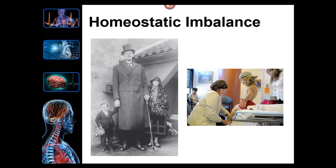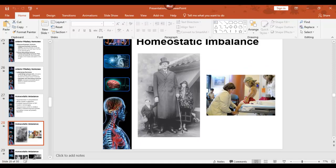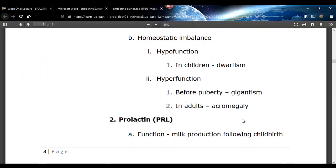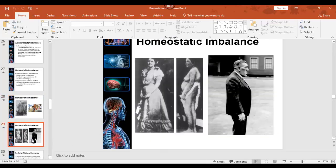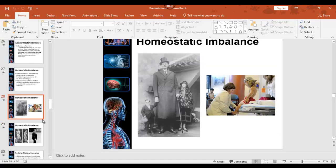Too much growth hormone prior to puberty would be gigantism, but excessive growth after puberty is called acromegaly — all the facial features get bigger. See how tall this person is? That's an excess amount of growth hormone.